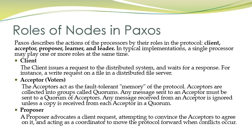The second type of node in Paxos is the acceptor. The acceptor acts as the fault-tolerant memory of the protocol. Acceptors are collected into groups called quorums. Any message sent to an acceptor must be sent to a quorum of acceptors. Any message received from an acceptor is ignored unless a copy is received from each acceptor in a quorum. Members of the quorum are acceptors.